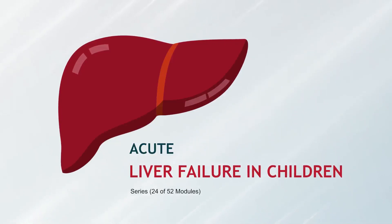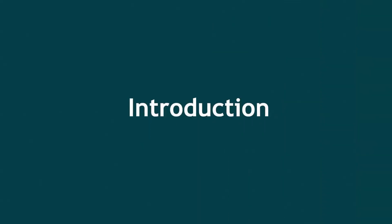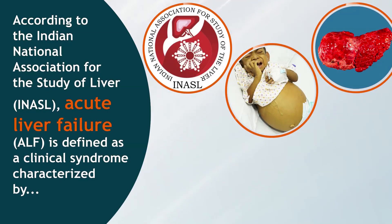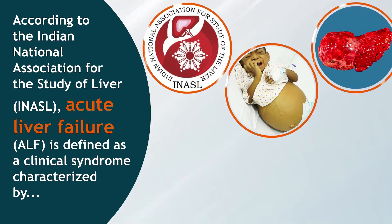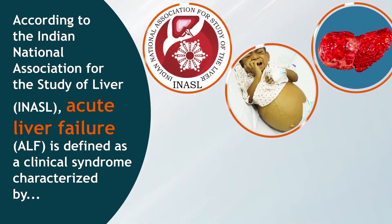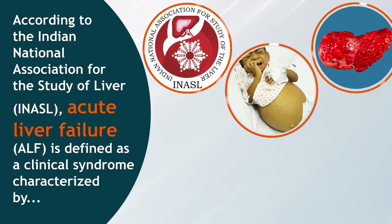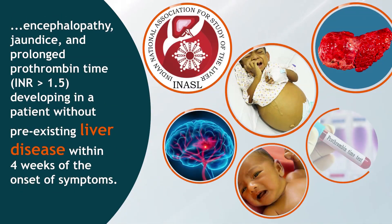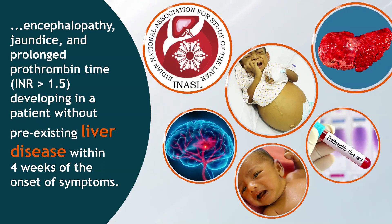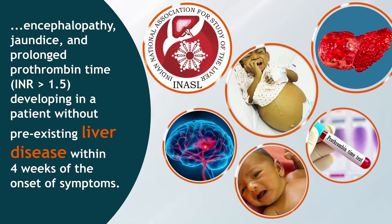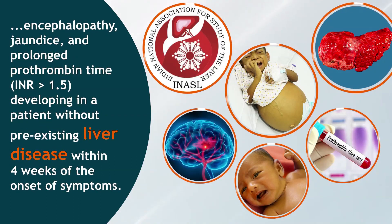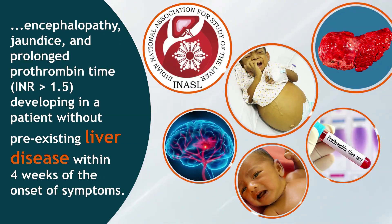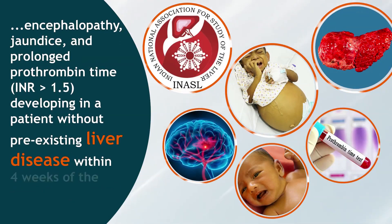Acute Liver Failure in Children. According to the Indian National Association for the Study of Liver (INASL), acute liver failure (ALF) is defined as a clinical syndrome characterized by encephalopathy, jaundice, and prolonged prothrombin time (INR greater than 1.5), developing in a patient without pre-existing liver disease within 4 weeks of the onset of symptoms.